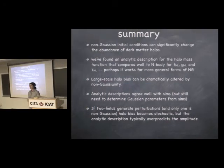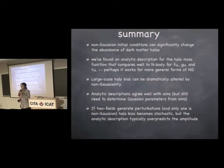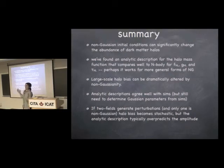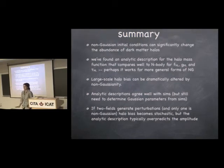Question about band-limited non-Gaussianity — meaning non-Gaussianity that only exists over a small range in k. The answer is that these local models are the easiest thing to write down and simulate, but there has been some work on other things — Simone had a paper with collaborators looking at putting some k-dependence in these different parameters and seeing how that works in simulations. That's an ongoing area of research.